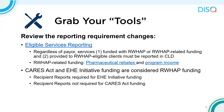It's important to check whether reporting requirements have changed at the beginning of each submission year. This year, there is one major change: eligible services reporting was introduced as an option during the 2019 RSR but is now required for all recipients and providers. This means all providers must include services provided to Ryan White eligible clients funded via Ryan White related funding in their client level data file, regardless of payer. Ryan White related funding includes pharmaceutical rebates and program income. CARES Act and EHE funding should be treated as Ryan White funding.